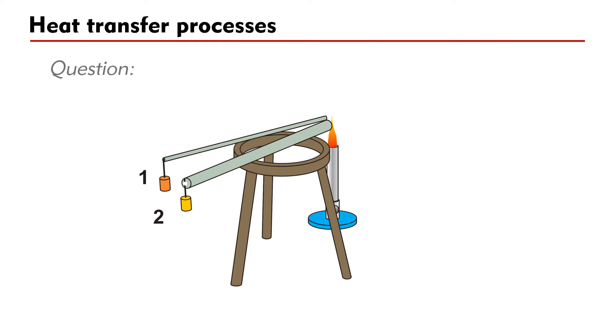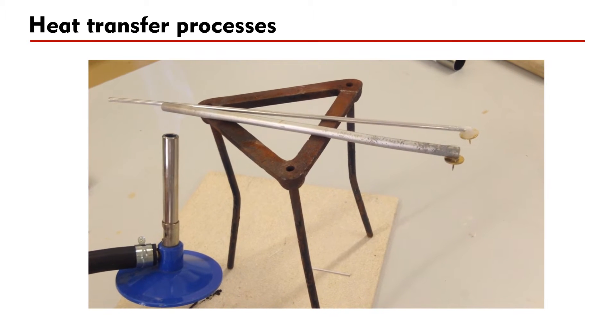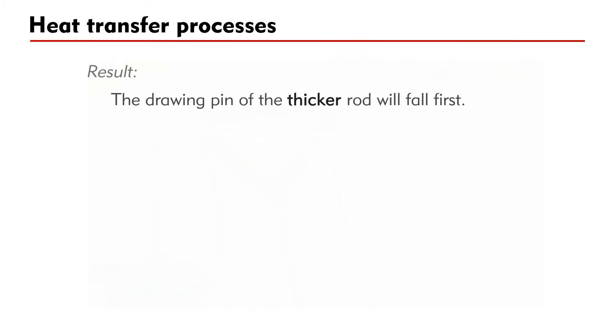In the last video, I have a question about an experiment in which two aluminum rods of the same length but different thickness are stuck with a joint pin at one end by melted wax and heated at the other end. My question is which joint pin will fall first? The experiment has been carried out and is shown here. Results show that the joint pin of the thicker rod will fall first. This experiment shows that the rate of heat conduction in a thicker rod is faster.